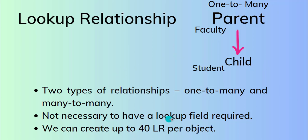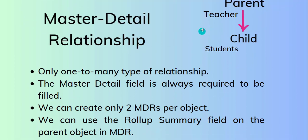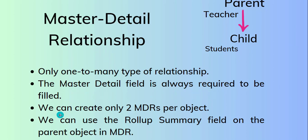Next, the master detail relationship. Taking the example of teacher and students: in this relationship, only a one-to-many type is available. The master detail field is always required to be filled in. We can create only two master detail relationships per object.